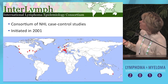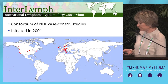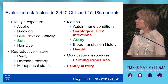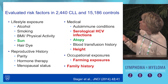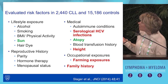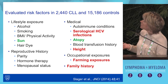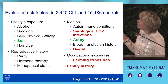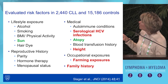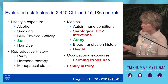We have most of the studies in North America and a number in Europe and Australia. One of the larger Interlymph studies was published in 2014, evaluating risk factors in 2,400 CLL cases and 1,500 controls. We looked at lifestyle exposures — alcohol, smoking, BMI — as well as reproductive history, medical exposures including autoimmune conditions, hepatitis C virus, atopy, blood transfusions, occupational exposures, and family history.